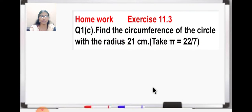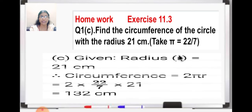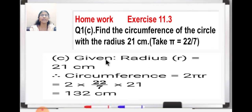So first let us see the homework question. Question number 1, C part of exercise 11.3 was your homework. The question was: find the circumference of the circle with the radius 21 centimeter, and you have to take pi as 22 upon 7. So first, we will write what is given in the question. We know the radius, so we write radius is equal to 21 centimeter. And then what we have to find out — we have to find out circumference. So to find out circumference, we need to write the formula: circumference is equal to 2πr.